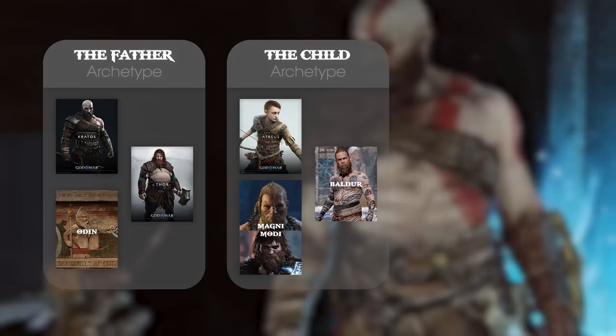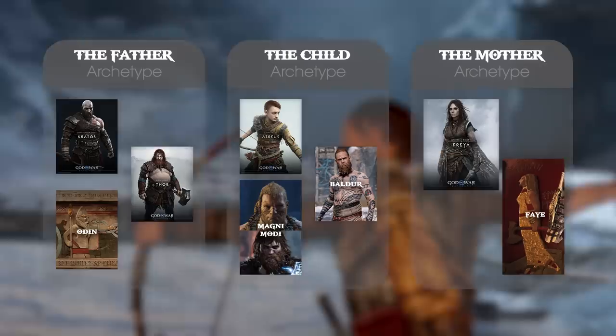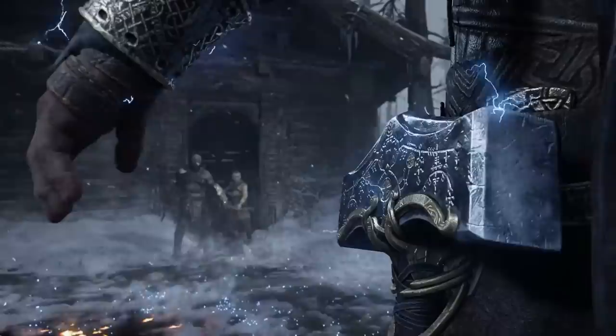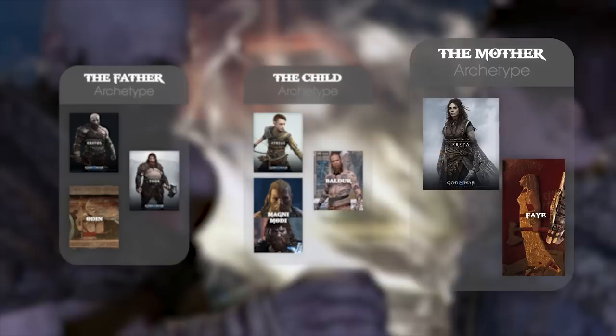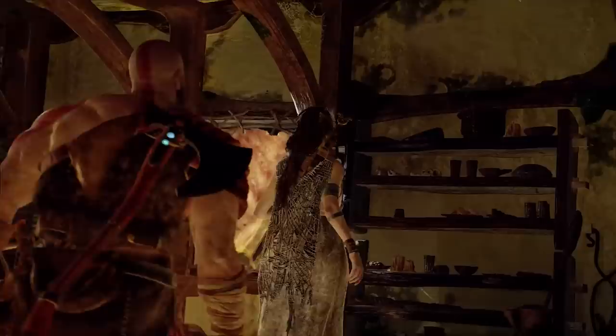Atreus, Baldr, Magni, and Modi all represent the child. Faye and Freya are expressions of the mother. This will be the first in a trilogy of God of War deep dives exploring each of these in depth. As I expect to see a greater characterization for Thor once Ragnarok comes around, we will save the father and child until later. For now, we will focus on the archetype of the Great Mother.